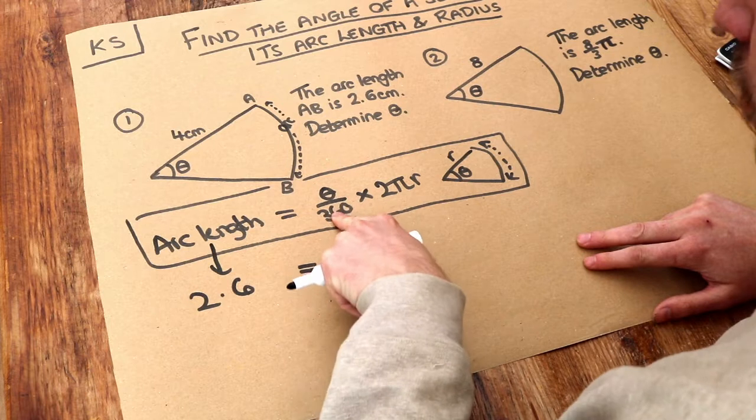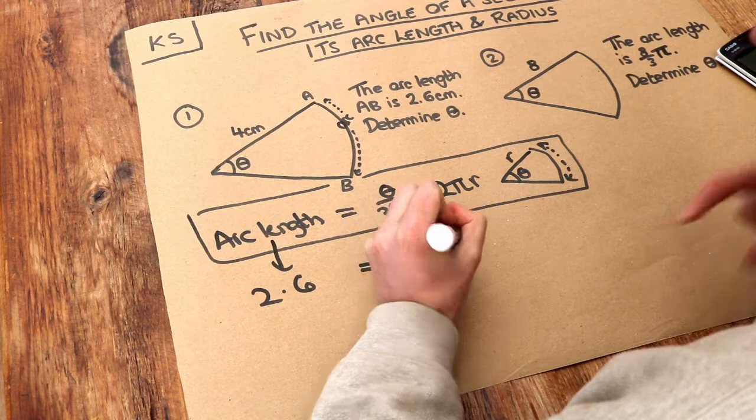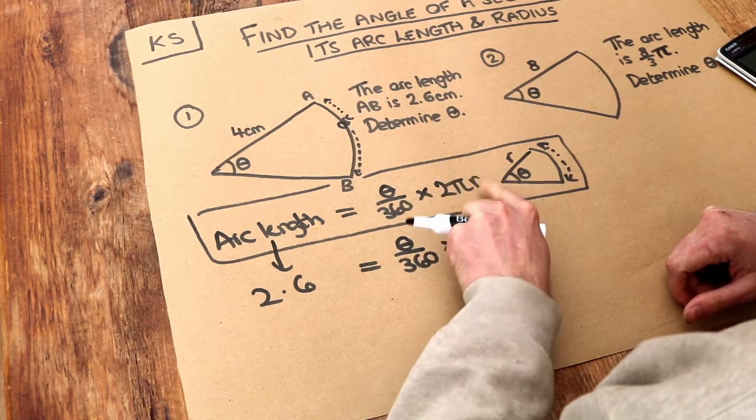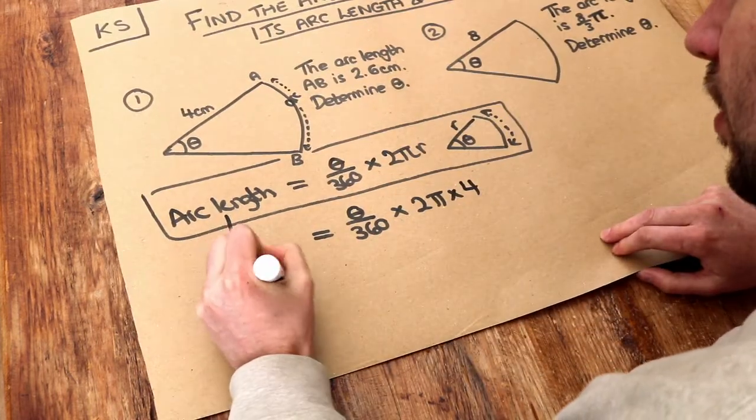Then we've got θ/360, we don't know θ yet, so it's just θ/360. And then times by 2π, and then we've got times r. r here is 4. Now let's just tidy this up a bit first, just to make it a bit simpler.